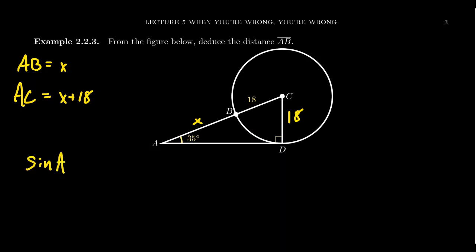sine of A equals CD over AC. Putting the information in, we have sin(35°) = 18/(X+18). We need to solve this equation for X.